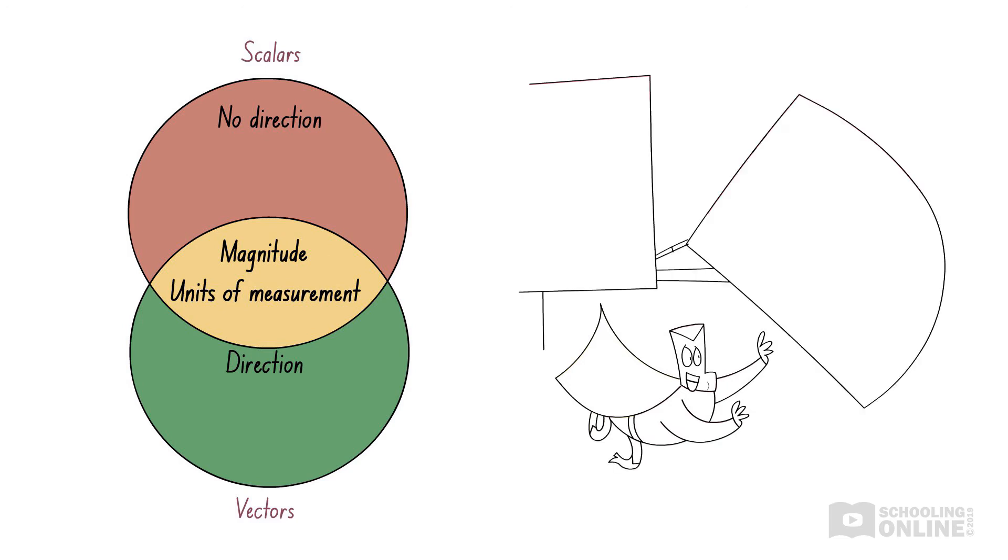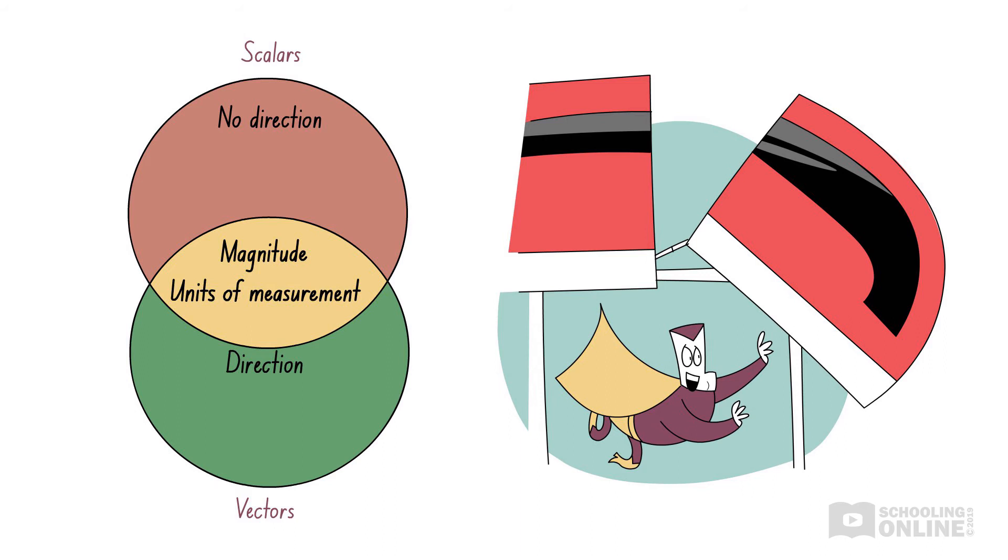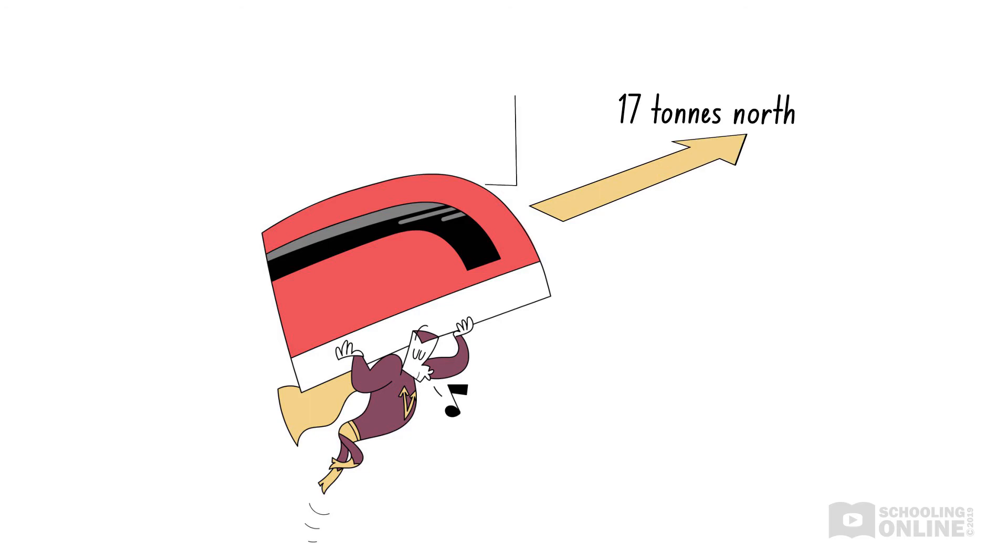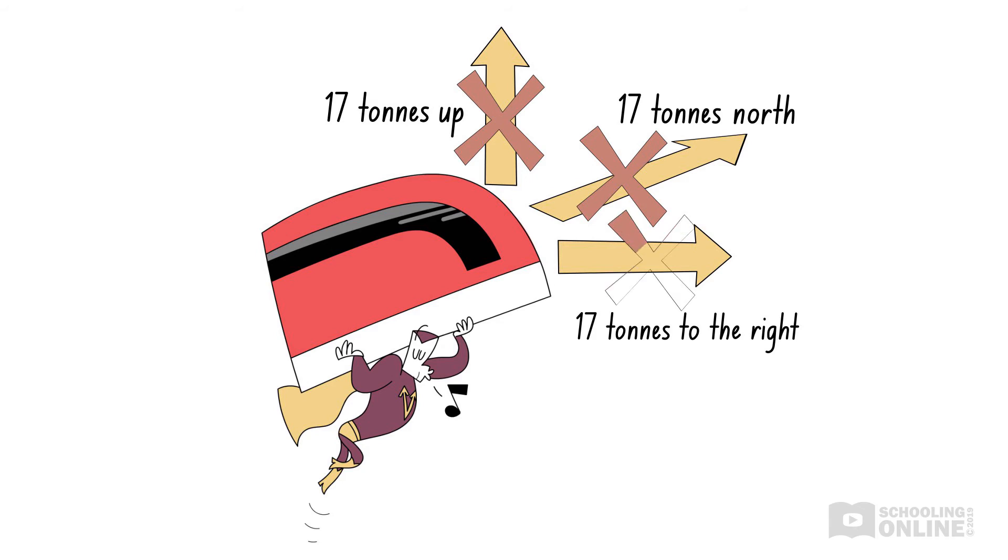Now that everyone is safe, Vector Man helps return things to normal. He lifts the front carriage of the train and places it back on track. As you can imagine, it's pretty heavy. The front carriage alone has a mass of 17 tonnes, or 17,000 kilograms. Now, let's add a direction to this quantity and see what happens. What if the mass of the train is 17 tonnes north, or 17 tonnes up? Perhaps 17 tonnes to the right? As you can see, trying to add a direction to the mass of the train carriage gives us an answer that doesn't make sense. That's because mass is a scalar quantity, so it only needs a magnitude and units.